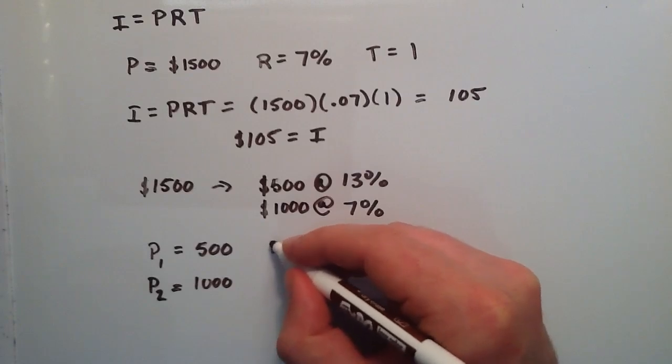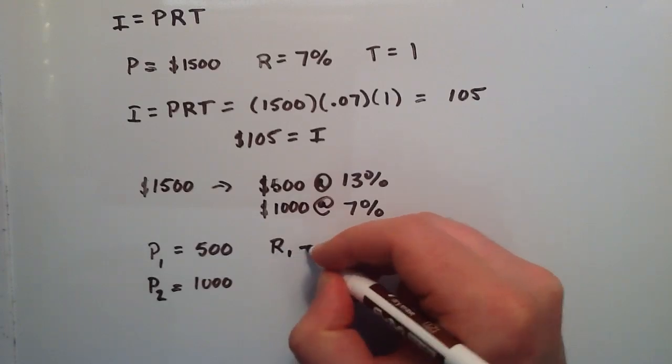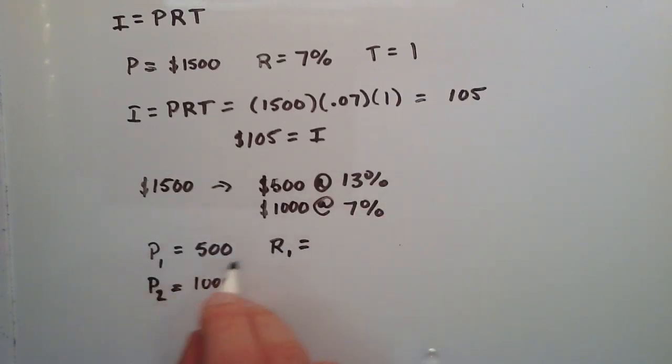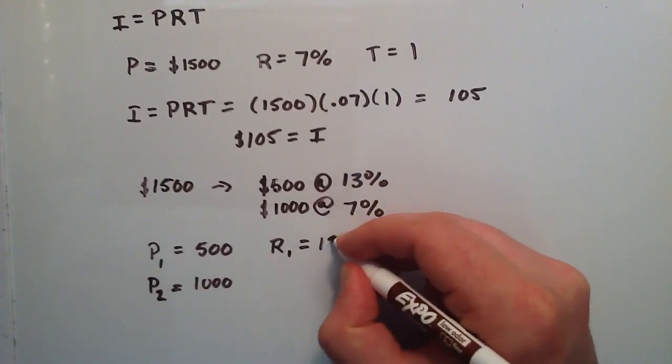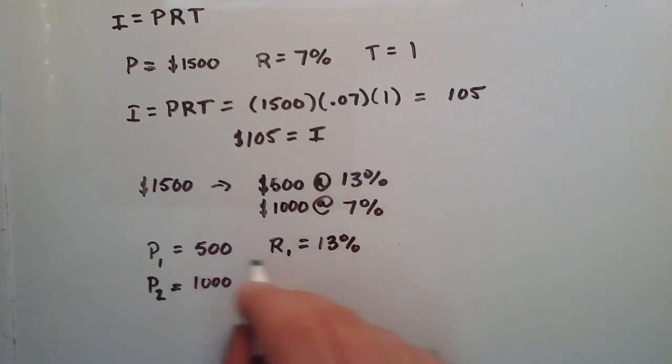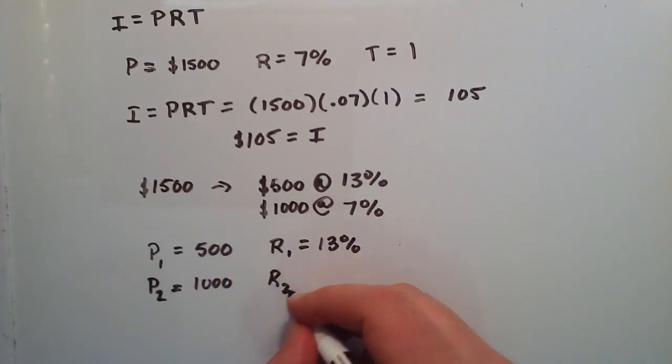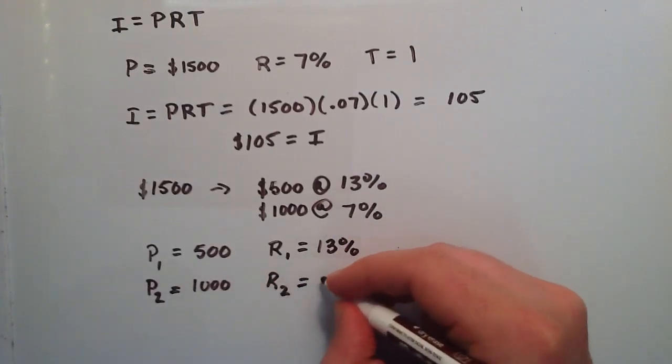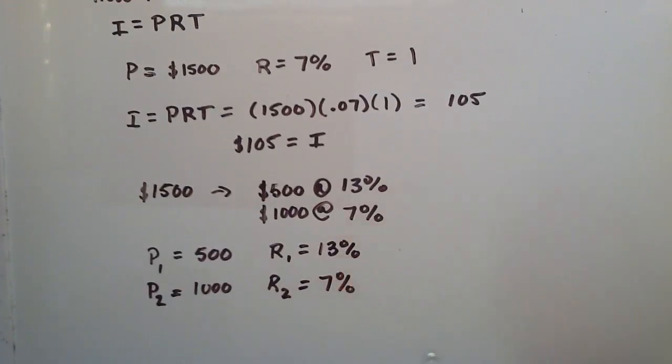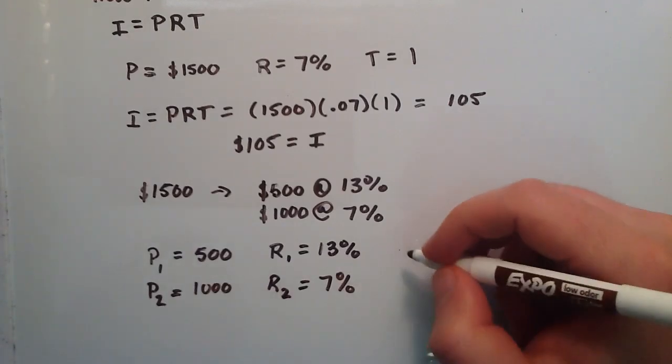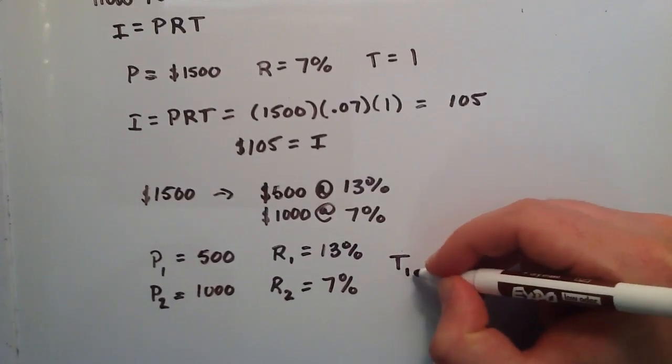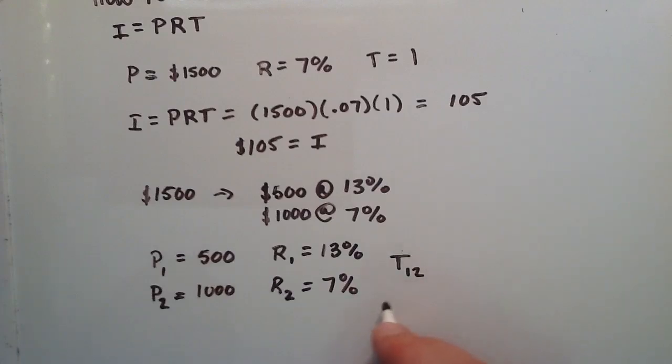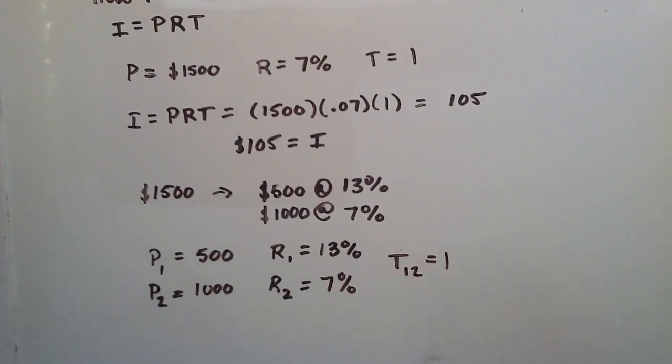And then we have a rate, R1. So that will be the rate corresponding to P1, and that will be 13%. So $500 at 13%. And then R2, we're going to invest $1,000 at 7%. So that will be our second rate. And both T1 and T2, I'll just put T12 for T1 or T2, it's still going to be one year.